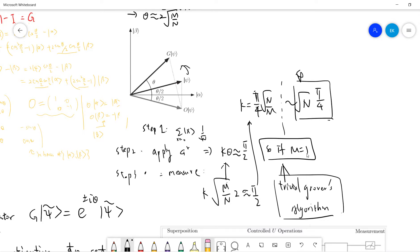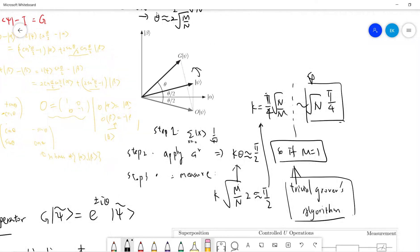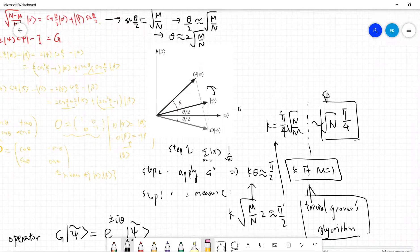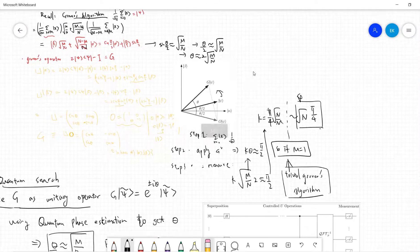So merely, if in the previous Grover's algorithm, if you only have one answer, then your k needs sqrt(N) times π/4. So this is the previous discussion of Grover's algorithm.